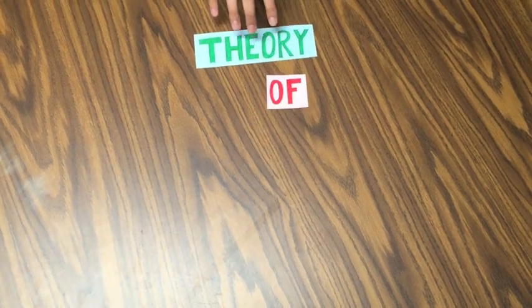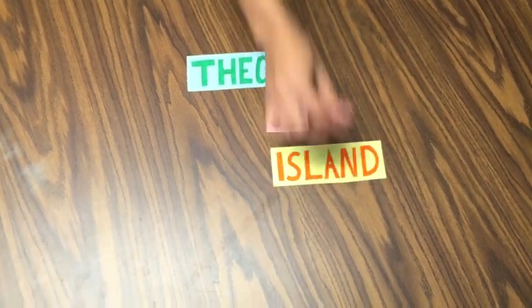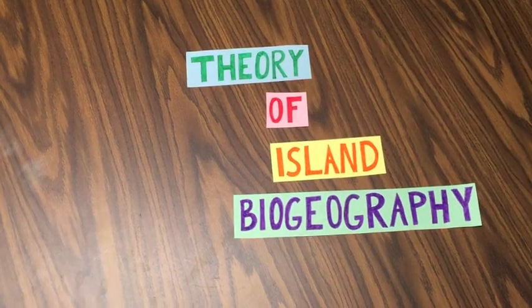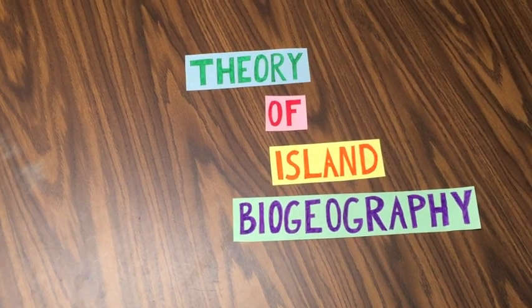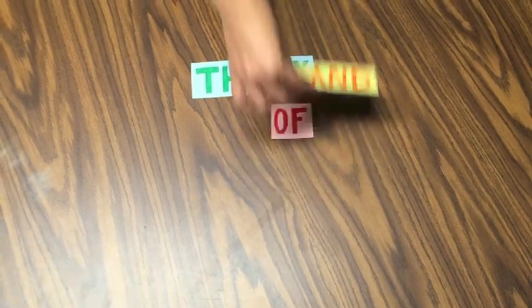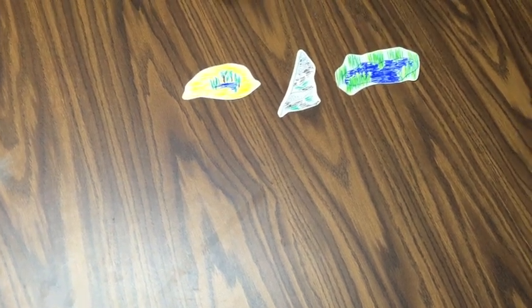The theory of island biogeography explains the concept of species richness, or the number of species on a particular island. For this concept, an island is any ecosystem that is drastically different from its surrounding ecosystems. For example, an oasis in a desert is an island, an alpine zone is an island, even a pond is an island.